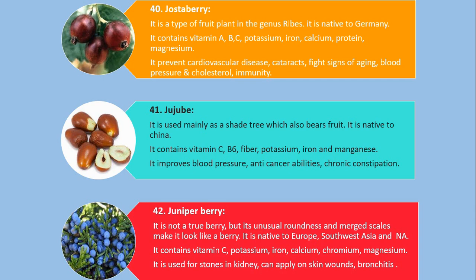Number 42. Juniper Berry. It is not a true berry, but its unusual roundness and merged scales make it look like a berry. It is native to Europe, Southwest Asia and the Nile region. It contains vitamin C, potassium, iron, calcium, chromium and magnesium. It is used for kidney stones, can be applied on skin wounds, and treats bronchitis.